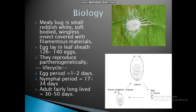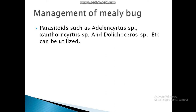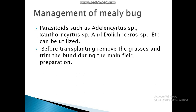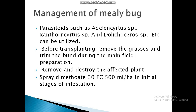Adult lifespan is 30 to 50 days. Management of mealybug: use parasitoids such as Adelina species, Trichoretus species, and Dolichocerus species. Before transplanting, clean water grasses and trim bunds. Remove and destroy affected plants. Spray dimethoate 30 EC at 500 ml per hectare at the initial stage of infestation.